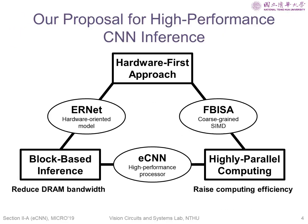We apply a hardware-first approach to software-hardware co-design. For reducing DRAM bandwidth, we propose a block-based inference flow and devise ERNET accordingly. For raising computing efficiency, we consider a high parallel computing architecture. We then implement these ideas into the eCNN processor from architectural design to layout implementation.